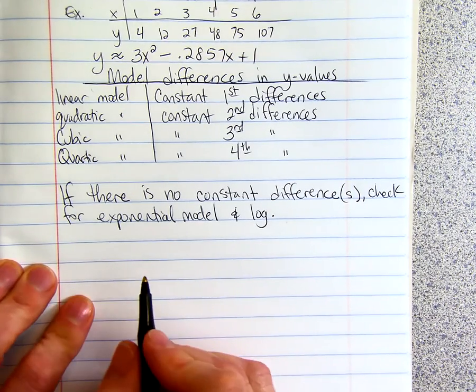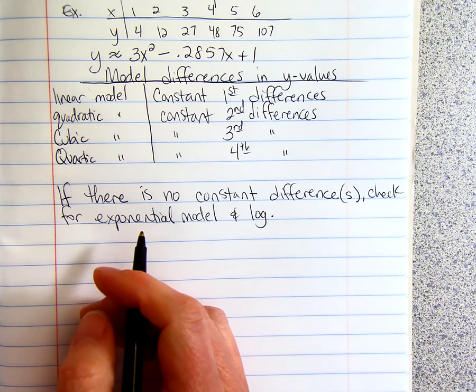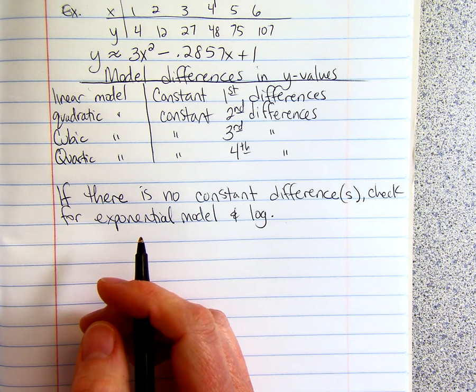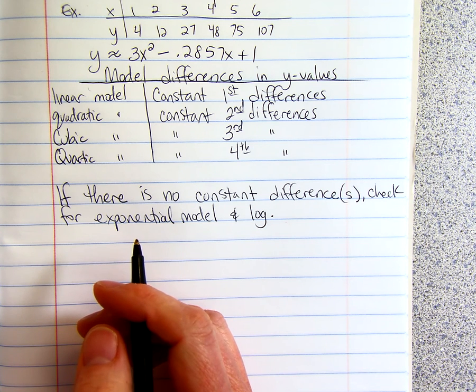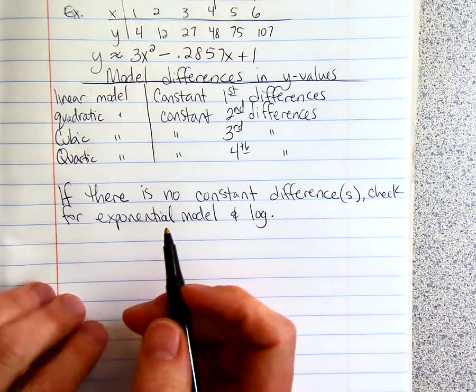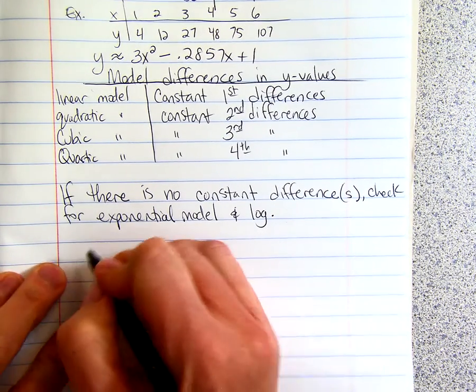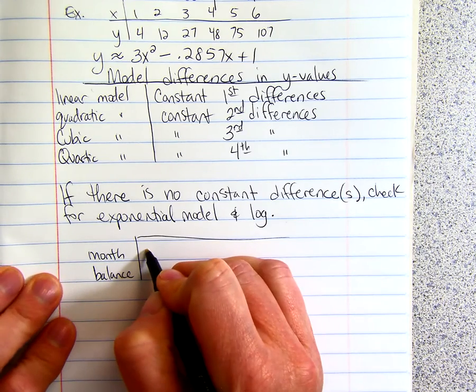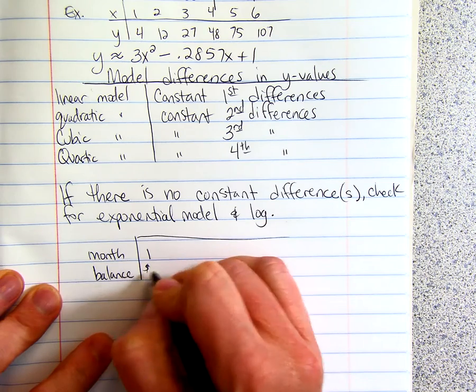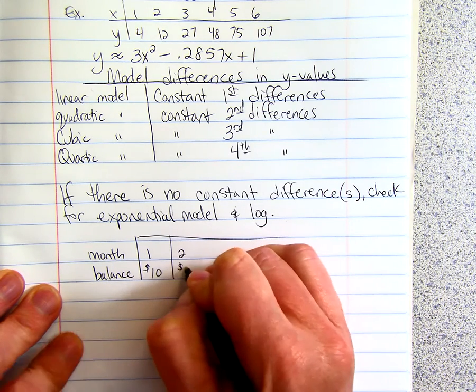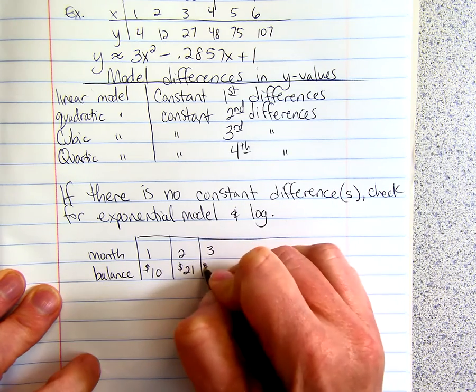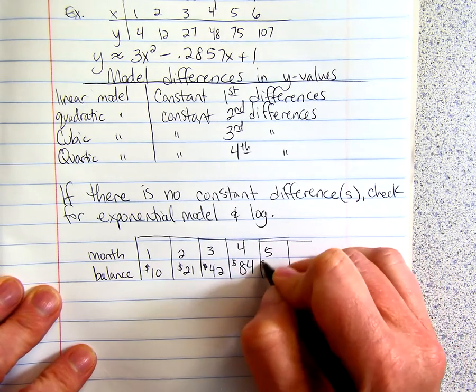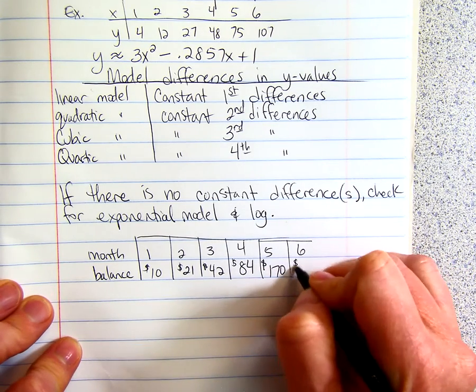So here's one example. Let's see. This was, where did I get this one? Oh, here it is. So this is a data table. We have the month and the balance must be like in the account. So month one, the balance was $10. Month two, the balance was $21. Month three, 42. Four was 84. Five had 170. And month six had 340.